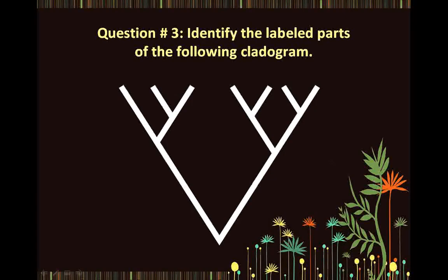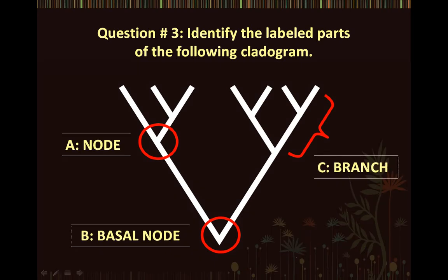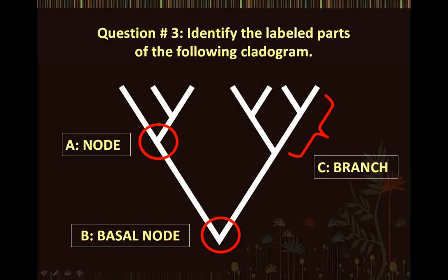Question number three: Identify the labeled parts of the following cladogram — A, B, and C. Part A represents the node. Part B represents the basal node because it is the lowest node on this phylogenetic tree. And part C represents a branch.